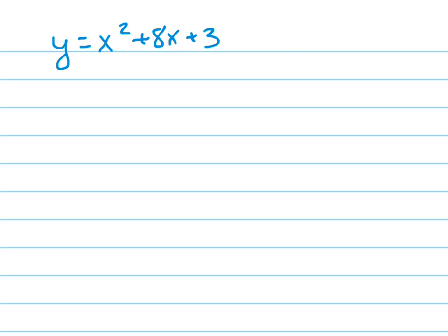Let's put this in vertex form. Some books call this standard form for a quadratic, some books call it vertex form. I like to call it vertex form because that's what you're doing — you're finding out what the vertex is. And that's done by completing the square.